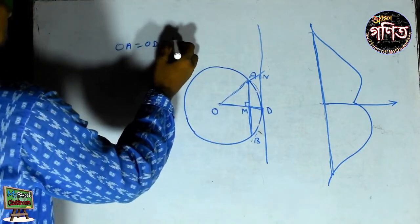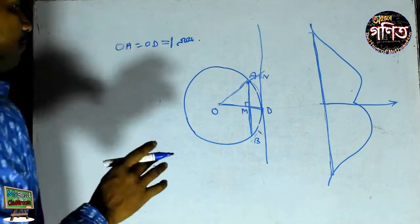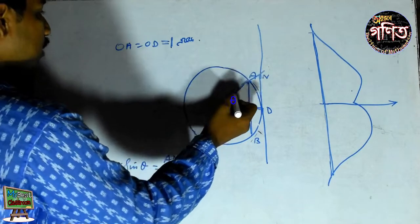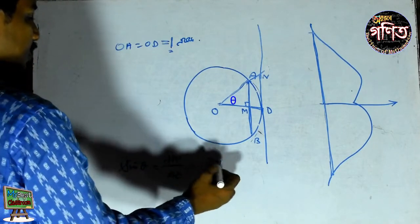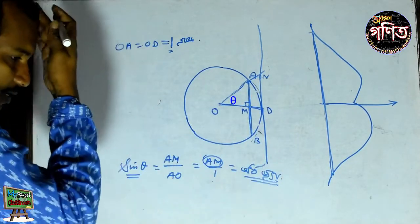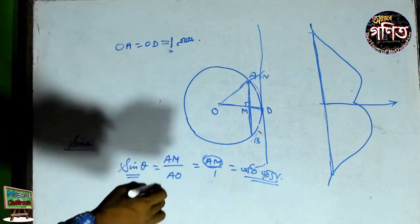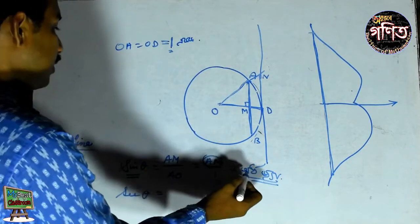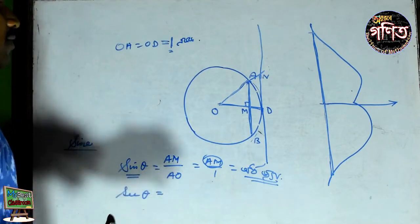One thing — we'll call AQ. Sin theta — what is it? AM by AO. So if we look, A is the same way? This is AM by 1. So sin is equal to AM. AM is equal to AM. AM is equal to 0. This is equal to 0. So this is equal to sin. The same thing is equal to sin. This is equal to sin.